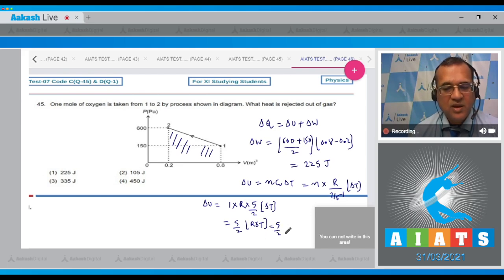5/2 times P₁V₁ minus P₂V₂ because n is 1. So ΔT I'm using the equation that P₁V₁ equals nRT₁ and P₂V₂ equals nRT₂.